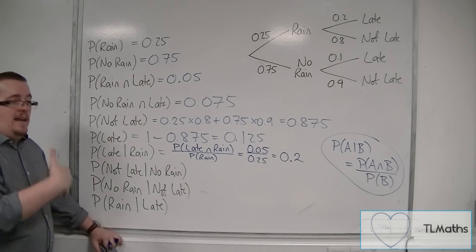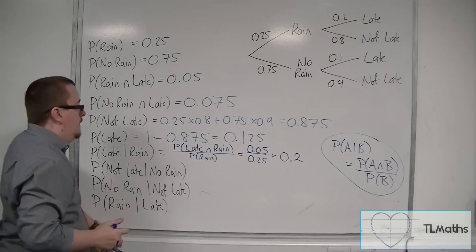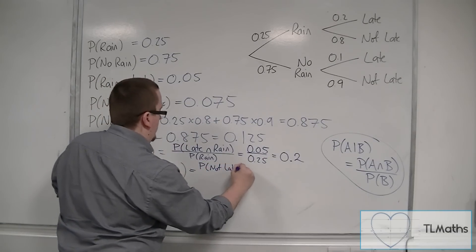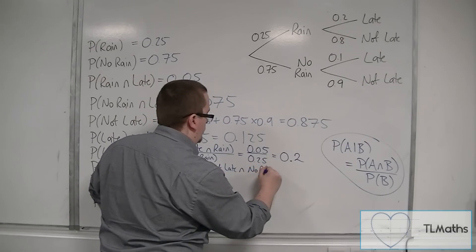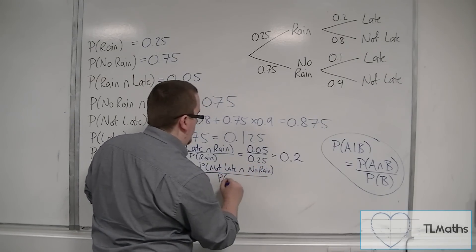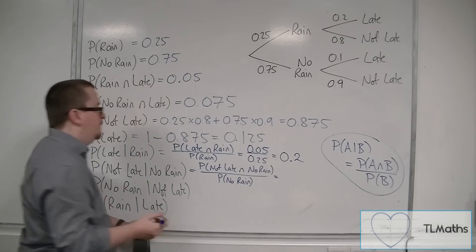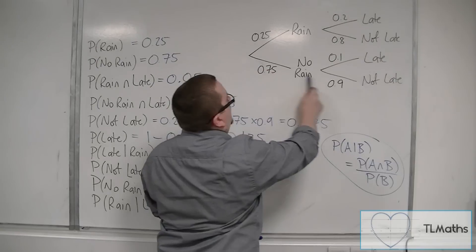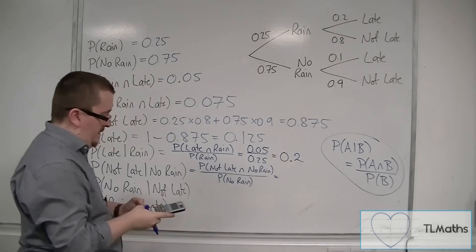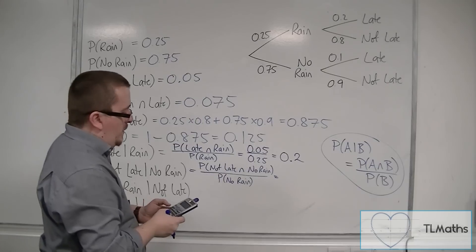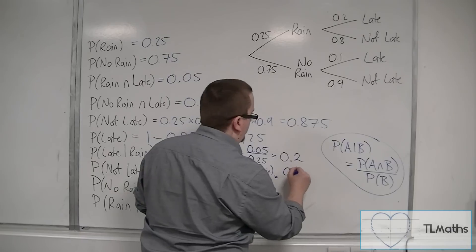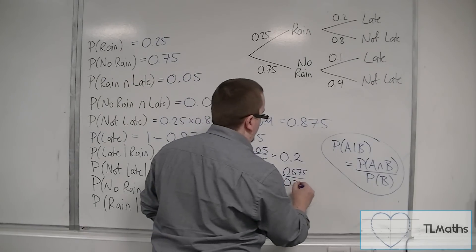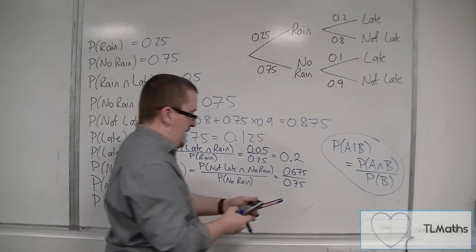If you want the probability of not being late given that there was no rain, then we're looking for the probability of not being late intersected with no rain, divided by the probability of there not being any rain. Not late and no rain would be 0.75 times 0.9, which is 27 over 40 or 0.675, divided by the probability of no rain, which is 0.75. So we get 0.9.